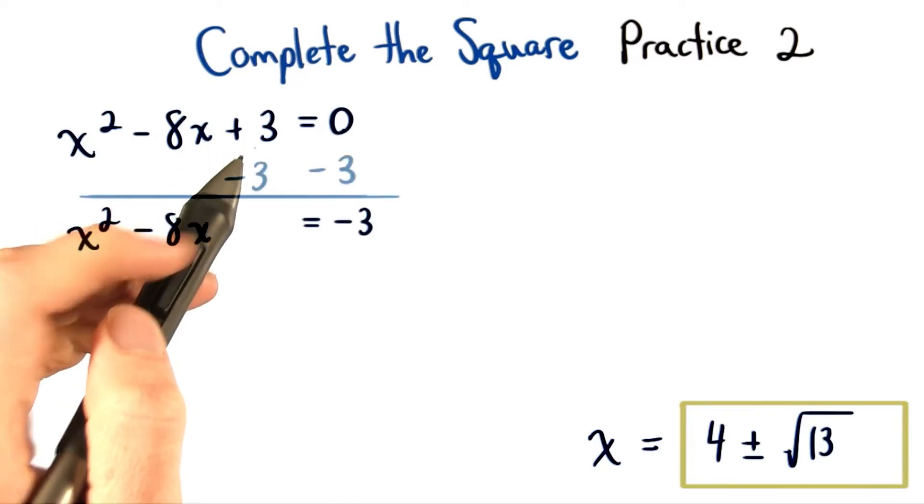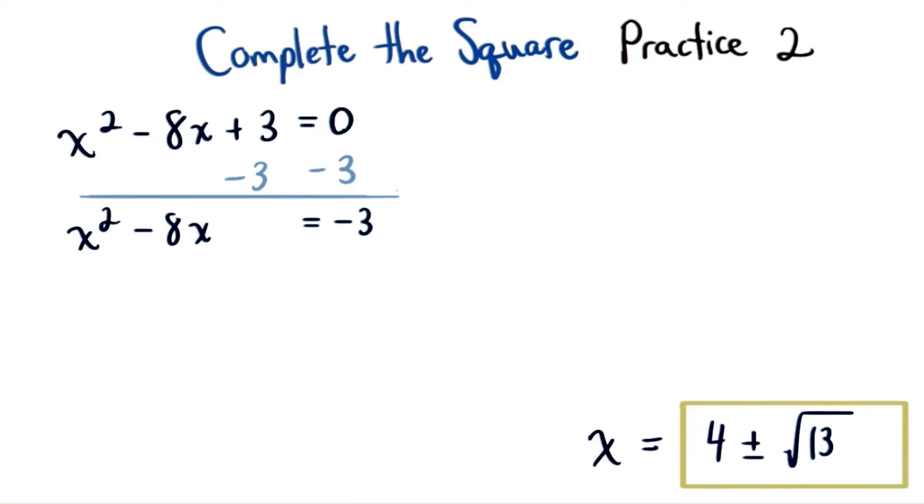Again, we start by moving this constant term to the right side of our equation. So we have x squared minus 8x equals negative 3.